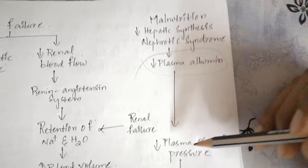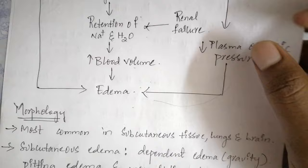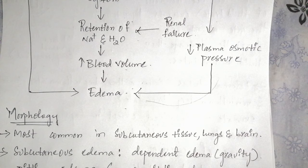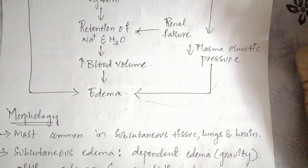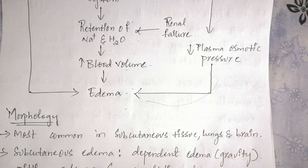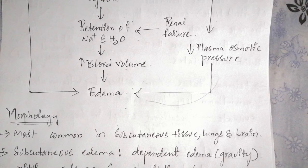Let's talk about the morphology of edema. Most commonly, edema is seen in subcutaneous tissue, lungs, and brain, although it can occur in any organ. Subcutaneous edema can be more diffuse or conspicuous in regions with high hydrostatic pressure. Its distribution is often dependent on gravity, so it is also called dependent edema.